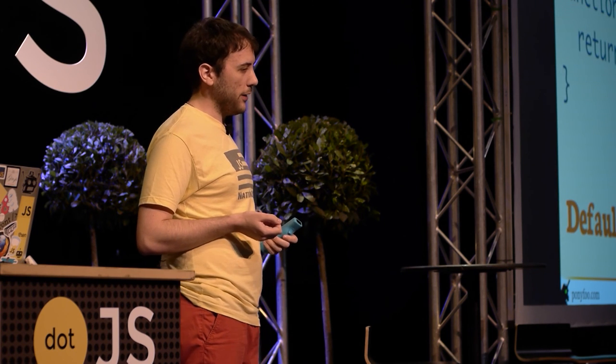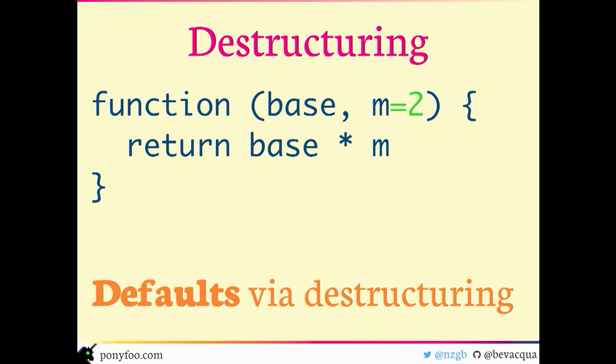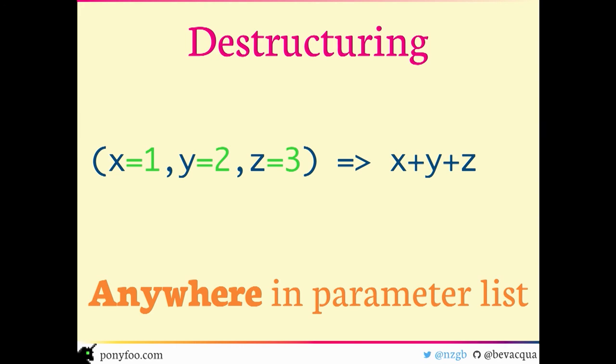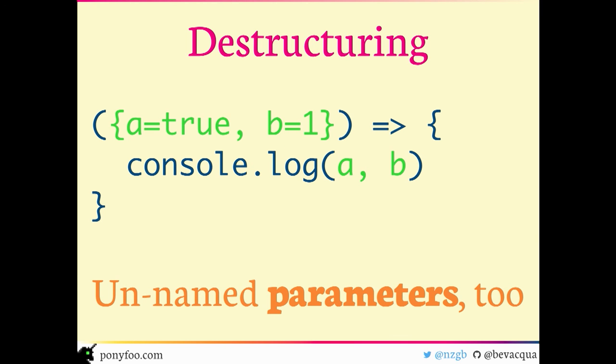There are also default values in parameters in function calls and in arrow functions, so you have your bases covered there. You can use them in any position in the function — not just the last few, as in some languages that only provide default values for the last arguments. You can also destructure a parameter entirely rather than just provide a default for it, so if you have an options parameter you can provide defaults for each individual option in the parameter list itself.